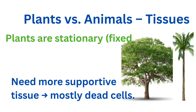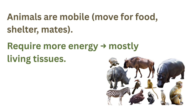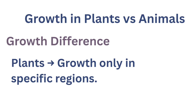Our next question is: are plants and animals made of the same type of tissues? Let us compare their structure and functions. Plants are stationary — they remain fixed in one place — so to stay upright they need a large amount of supportive tissue, and most of this supportive tissue is made of dead cells. Animals, on the other hand, can move around in search of food, shelter and mates; since they move actively, they require more energy, and that is why most tissues in animals are made of living cells.